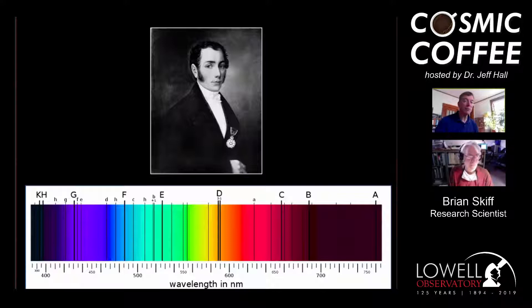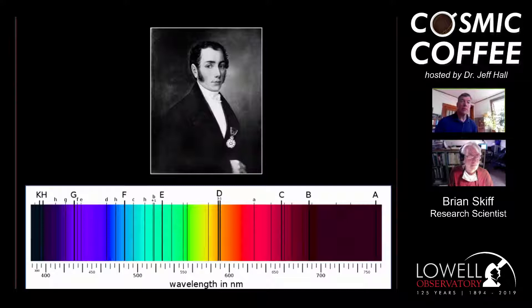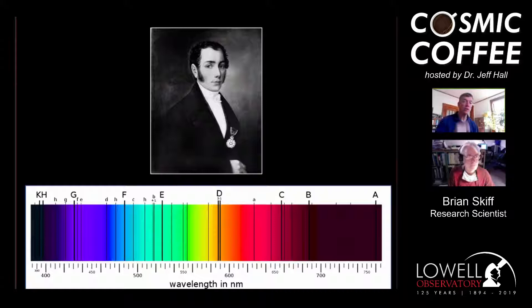Interestingly, in the literature today we never refer to the Fraunhofer C line — we just say that's hydrogen alpha, one of the most prominent lines in the spectrum. I'd also like to note that the sodium D line, the D doublet, emits right at a portion of the spectrum that looks fairly amber — that's the emission of low-pressure sodium lighting, now obsolete, which is why that dark-sky lighting had that distinct amber color. We've been studying calcium H and K for decades here at Lowell.